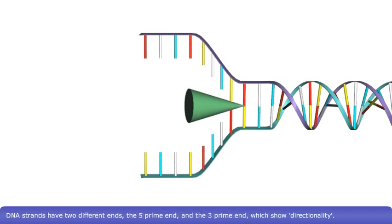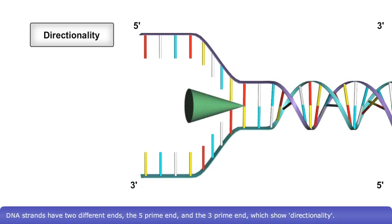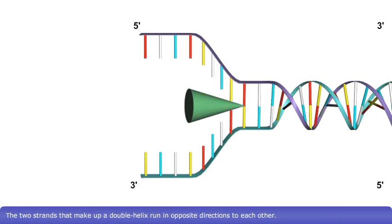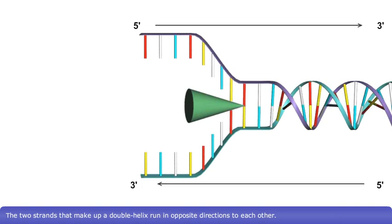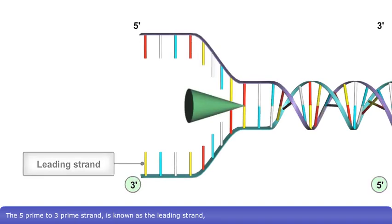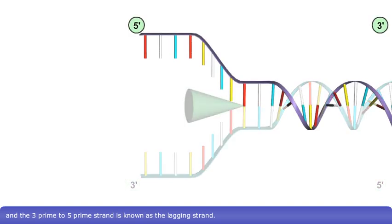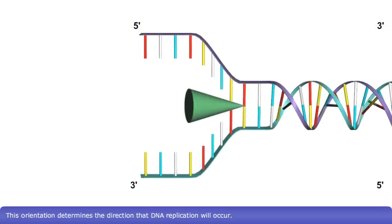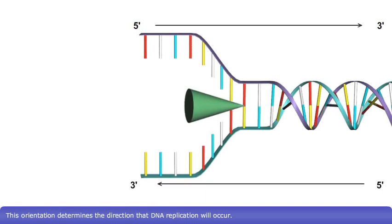DNA strands have two different ends, the 5' end and the 3' end, which show directionality. The two strands that make up a double helix run in opposite directions to each other. The 5' to 3' strand is known as the leading strand, and the 3' to 5' strand is known as the lagging strand. This orientation determines the direction that DNA replication will occur.